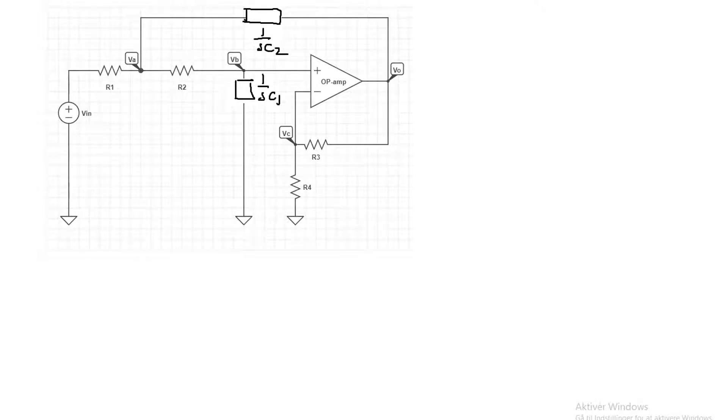Then we write up node equations for va and vb. Vc equals zero. This is the first. The second node equation is...